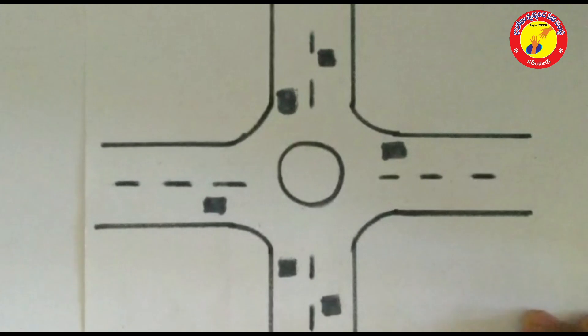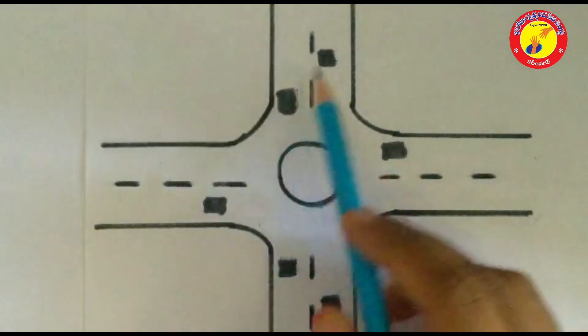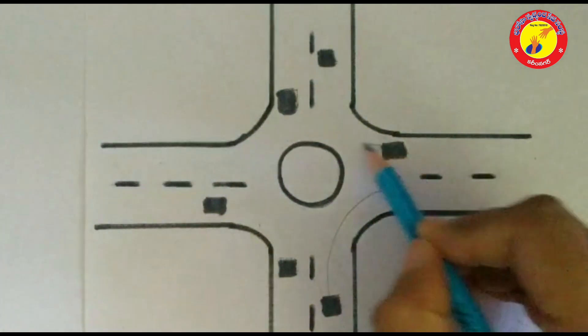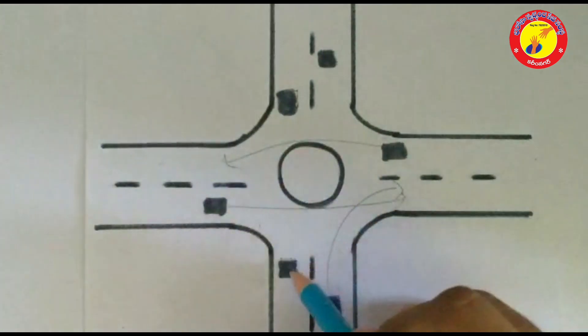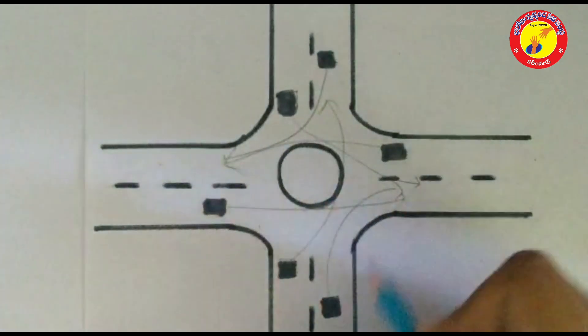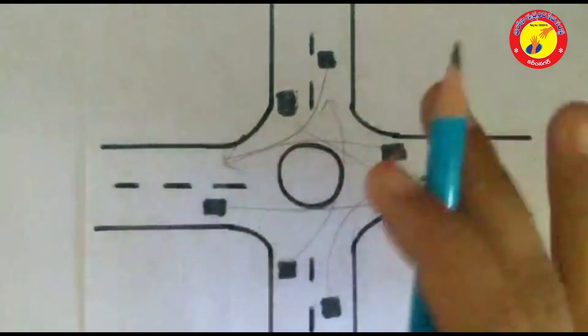Junction law. I took Chaurastha to understand junction law better. Daily, many vehicles come across Chaurastha. That means all the vehicles that enter into the junction will leave the junction. We can conclude that the number of vehicles entering into the junction is equal to the number of vehicles leaving the junction.